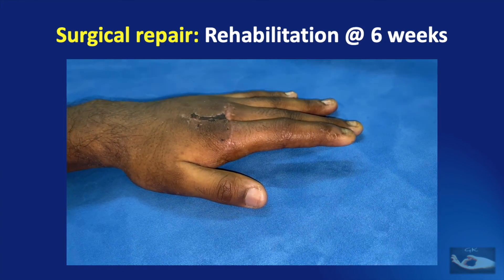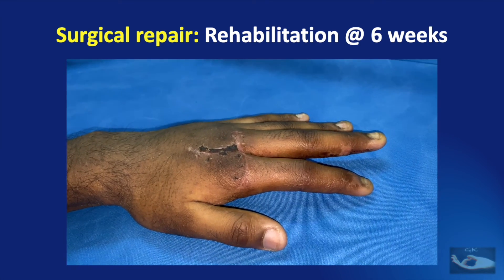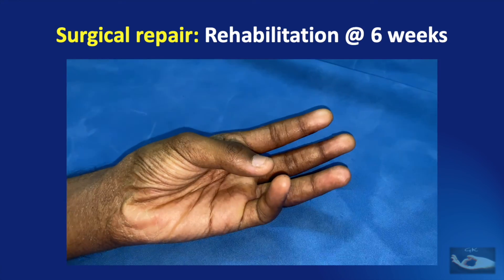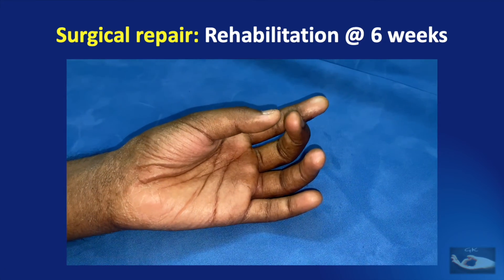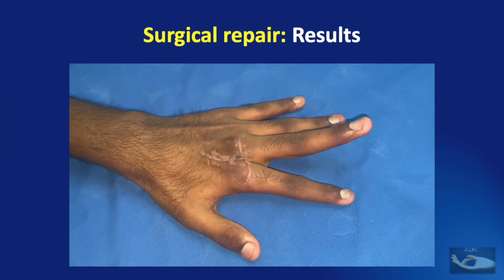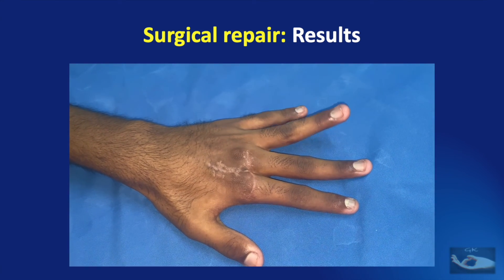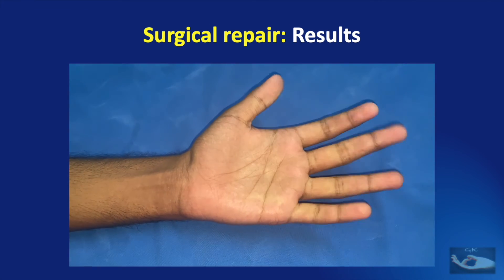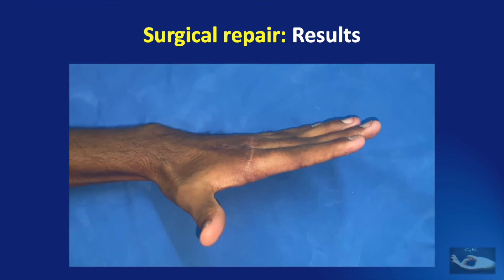One week further down the line, we can make out an improvement in the extension of the index and middle fingers, and we can also palpate the movement of the extensor tendon over the dorsum of the hand while the patient is attempting extension. Scar massage needs to be emphasized at this stage, as there has been a minimal superficial necrosis of the skin flap that was raised. Active flexion exercises for the fingers should also be encouraged. This is the result at the end of 8 weeks following the suturing of the extensor tendons of the index and middle fingers.